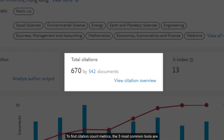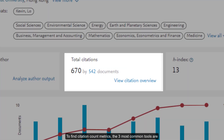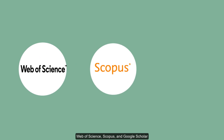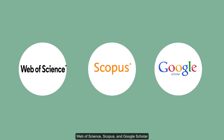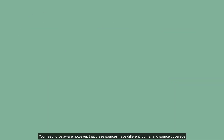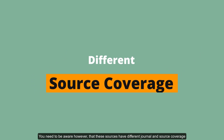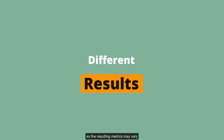To find citation count metrics, the three most common tools are Web of Science, Scopus, and Google Scholar. You need to be aware, however, that these sources have different journal and source coverage, so the resulting metrics may vary.